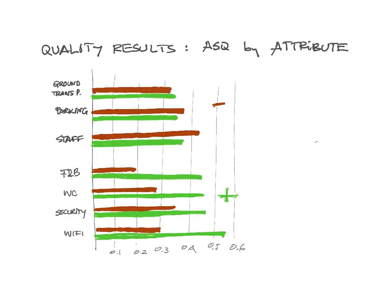Looking at attributes with four examples — Wi-Fi, security, check-in, food and beverage — there is a clear higher positive average versus the negative, indicating good quality. In contrast, attributes such as ground transport and parking show the red bar higher in some cases, suggesting lower passenger satisfaction in those areas.